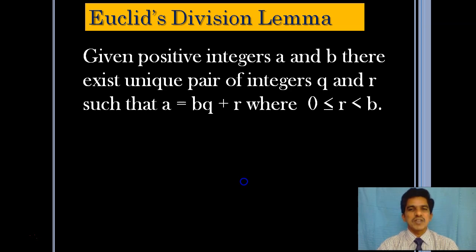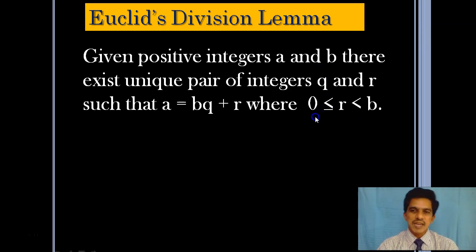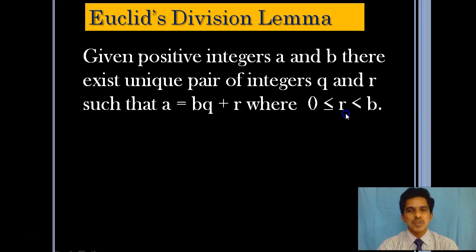Here a and b are positive integers. When we divide, we get the quotient q and remainder r. The remainder can be either equal to 0 or can be a positive number. But the remainder must be less than the divisor b. So the condition here is that the remainder can be either 0 or a positive number, but it should be less than the divisor.